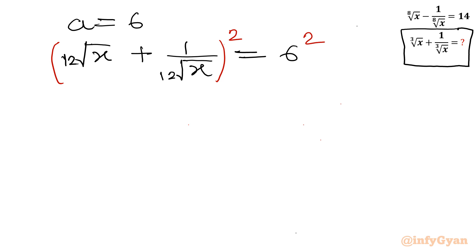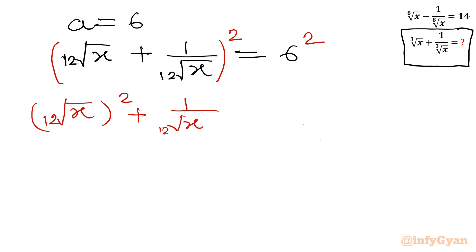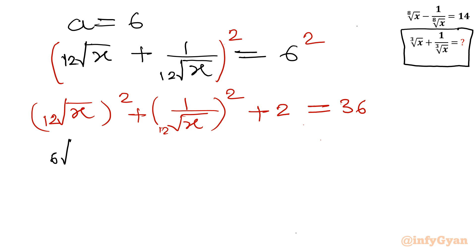Squaring both sides of 12th root of x plus 1 over 12th root of x equals 6, using the (a plus b) whole square formula: 12th root of x whole square plus 1 over 12th root of x whole square plus 2ab equals 36. Now 12th root of x whole square equals 6th root of x, so we get 6th root of x plus 1 over 6th root of x plus 2 equals 36. Moving 2 to the right hand side: 6th root of x plus 1 over 6th root of x equals 34.